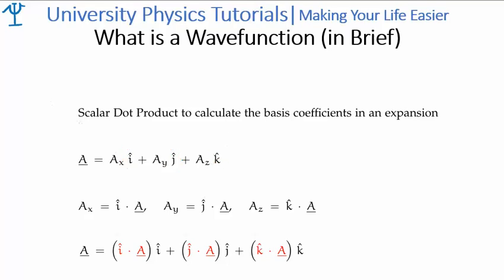And we know that we can expand A as a linear combination of coefficients a sub x, a sub y, and a sub z, with the corresponding basis states i-hat, j-hat, and k-hat. Now, I'm just trying to use the language we'll be using in quantum mechanics. That shouldn't be new to you, and neither should this: if you take the scalar product between any of your basis states and your vector, you'll get the corresponding coefficients a sub x, a sub y, and a sub z. Which means we can re-express A using this scalar product notation here. And if you understand this step, you're going to understand what a wave function is. So, let's move on.